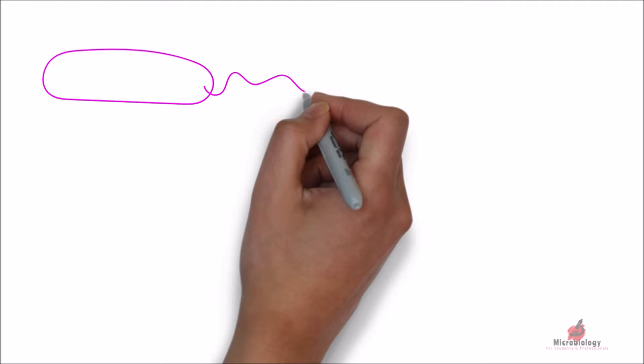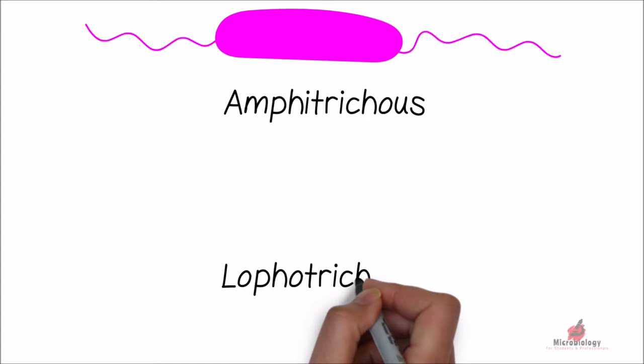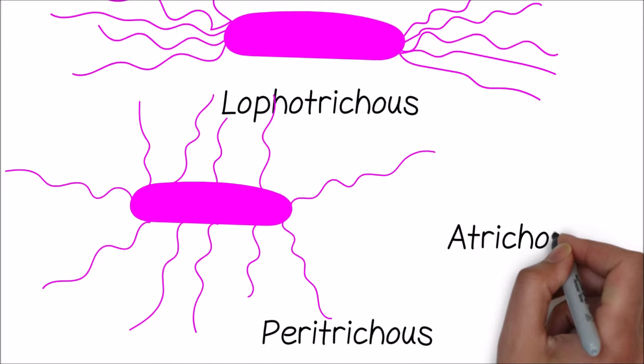Bacteria with single flagellum is called monotrichous bacteria. Bacteria with two flagella located at each end is called amphitrichous. Lophotrichous are the bacteria that has cluster of flagella at one or both ends. Peritrichous has got many flagella all around the cell wall. Atrichous does not have flagella at all.